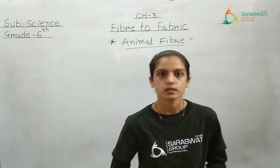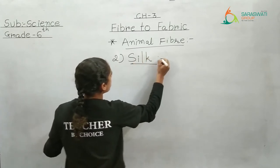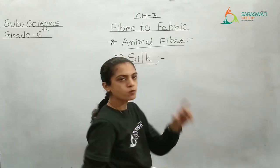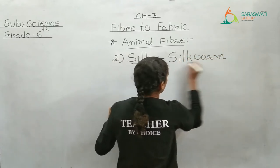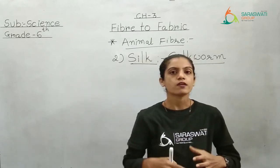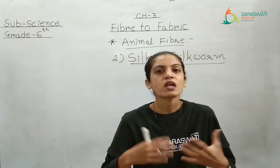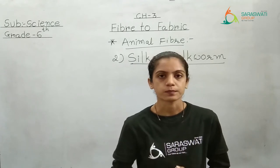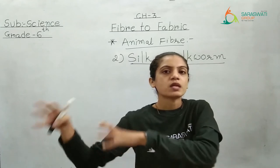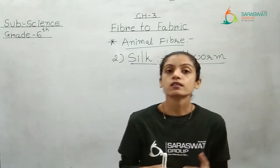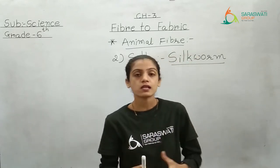Silk is the next fiber which we get from the animal. But from which animal? We get it from small worms — a very small worm. The name of that worm is silkworm. Silk is considered to be a very rich fabric. In ancient times, it was believed that only those who are rich could wear silk, because it was very costly at that time. It was originated in China, and then it has been passed to India, the Middle East and many more countries. So silk is another fiber which we get from the animal, and the name of the animal giving us silk is silkworm.